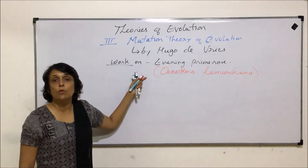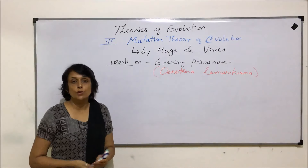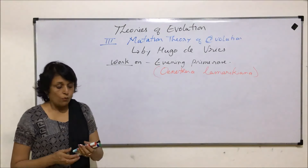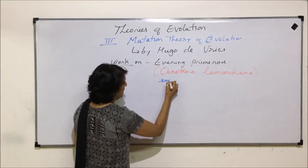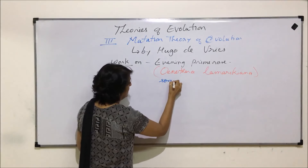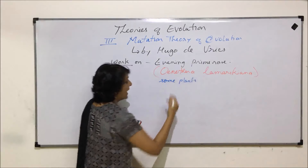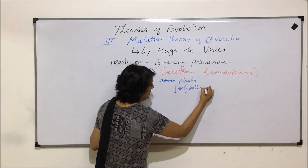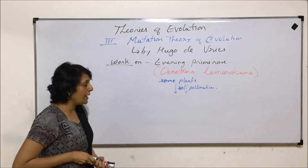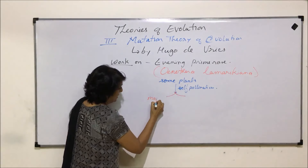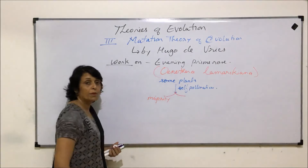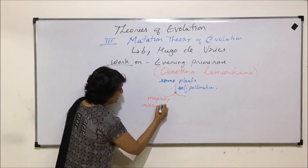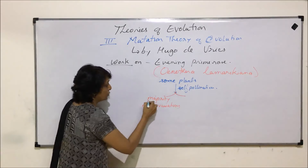Evening Primrose was growing in the garden around his house, so his work was based on the study of this plant. He selected some plants and after self-pollination found that the majority of the plants showed only minor variations — this was the maximum number.